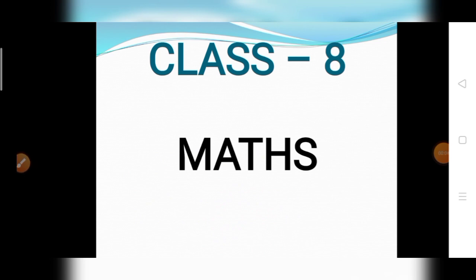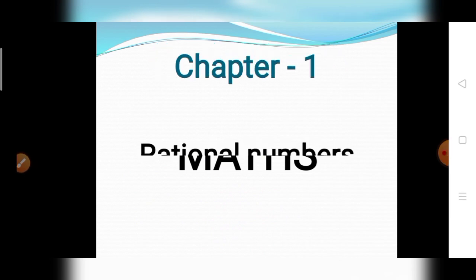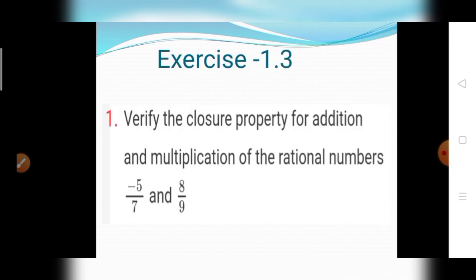Class 8 Mathematics, Chapter 1: Rational Numbers. Today we discuss Exercise 1.3, first question: verify the closure property for addition and multiplication of the rational numbers minus 5 divided by 7 and 8 divided by 9.